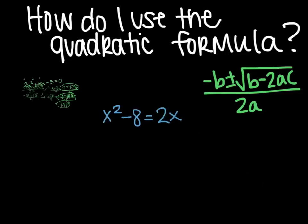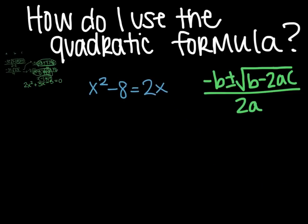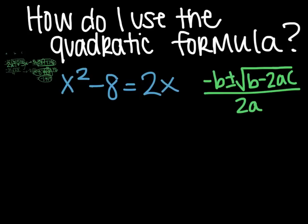Okay, this next problem looks a tad bit different, just because it's not written in the same form. But that's okay, you'll just move it so that it does. This will be x squared minus 2x minus 8 equals 0. And then plug in everything.